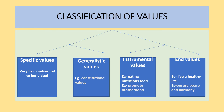Now let us look at the classification of values. We have classified values into two broad aspects: specific and generalistic values, and instrumental and end values. We had studied that values depend on individual to individual - the values that I have more internalized, or that my parents have more taught me, are called my specific values. For example, for me honesty and courage are two good values, both ethically sanctioned, but I will favor honesty more than courage.